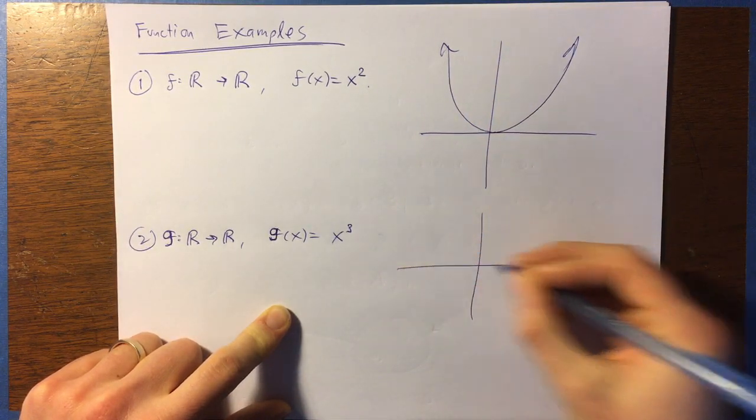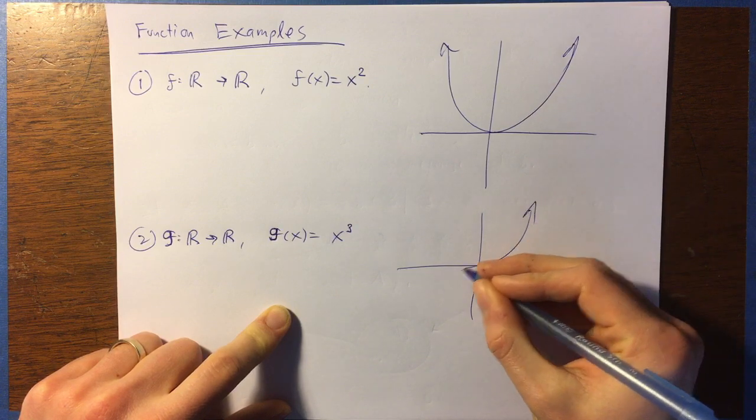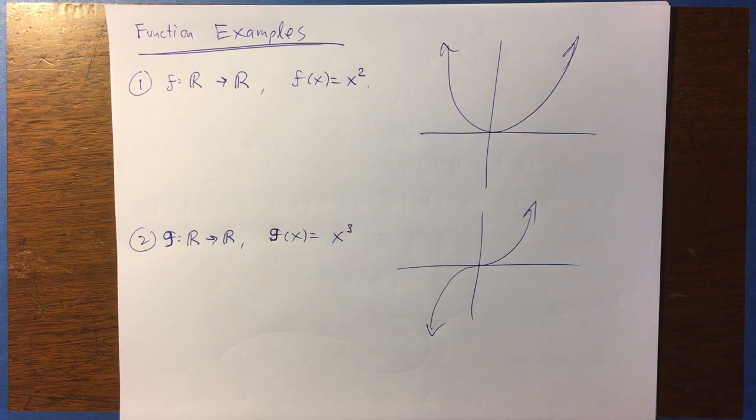f of x equals x squared produces this nice parabola, right? And f of x equals x cubed produces, you know, this graph that doesn't really have a name, the x cubed graph, right?